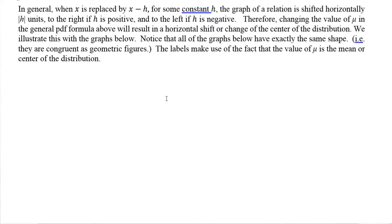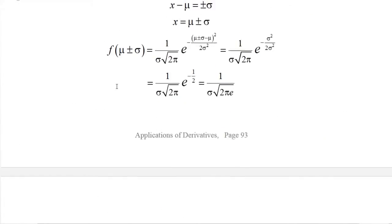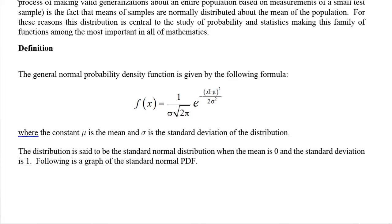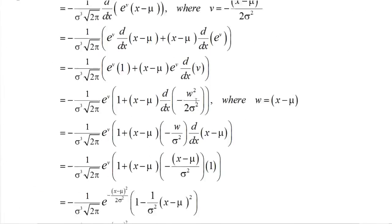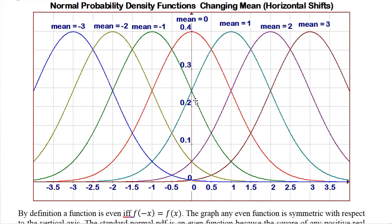Recall from precalculus that replacing x by (x−h) shifts the graph horizontally by |h| units — right if h is positive, left if h is negative. Changing the value of mu in the PDF formula is like taking the standard normal and replacing x by (x−μ), giving a horizontal shift. Graphing several normals with different mu values confirms the maximum always occurs at mu — these are just horizontal shifts of each other.